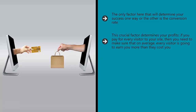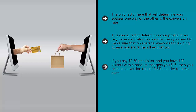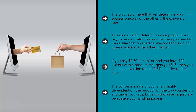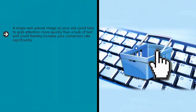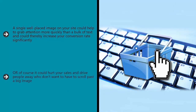If you pay for every visitor to your site, then you need to make sure that on average every visitor is going to earn you more than they cost you. If you pay 30 cents per visitor and you have 100 visitors with a product that gets you $15, then you need a conversion rate of 0.5% in order to break even — 50 visitors will cost you $15, so as long as one of them buys something from you, you're good. The conversion rate of your site is highly dependent on the product, on the way you design and target your ads, but also of course on just how persuasive your landing page is. A single well-placed image on your site could help grab attention more quickly than a bulk of text and could thereby increase your conversion rate significantly — that one change could make the whole operation profitable. Or, of course, it could hurt your sales and drive people away. How can you know which one works? Simple, by conducting a split test.